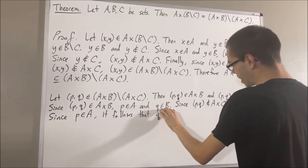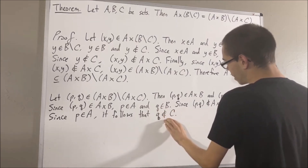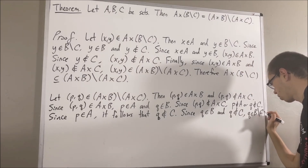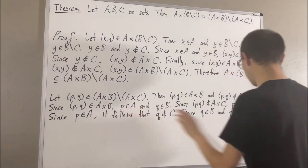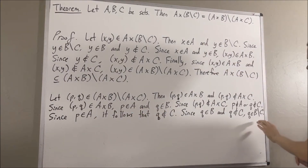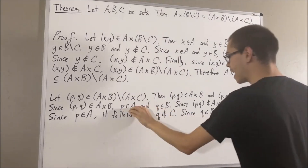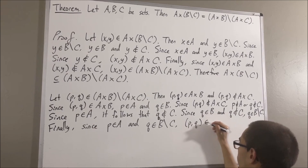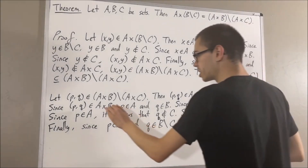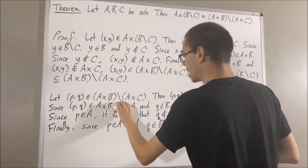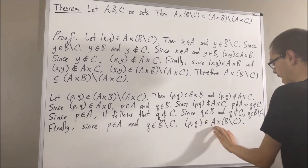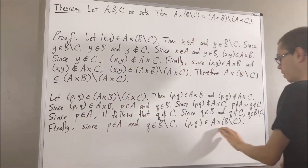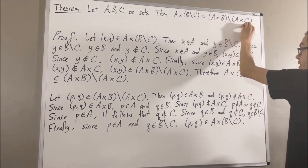We see that Q is an element of B, and Q is not an element of C. These two facts tell us that Q is an element of B set minus C. So the ordered pair P comma Q is an element of A times B set minus C. Since P comma Q was arbitrary, this means we have shown every element of this set belongs to this set — in other words, we have shown that this set is a subset of this set.